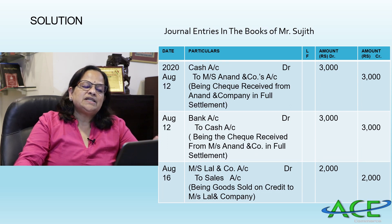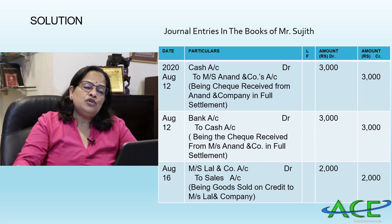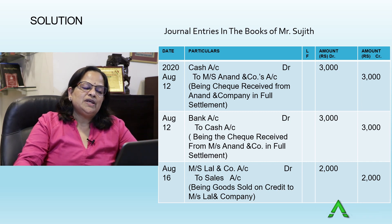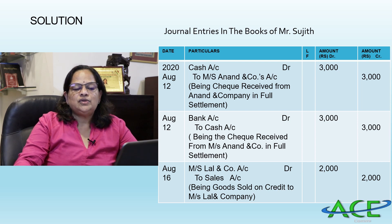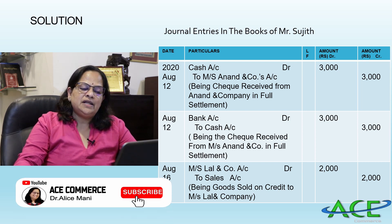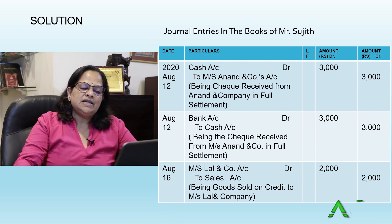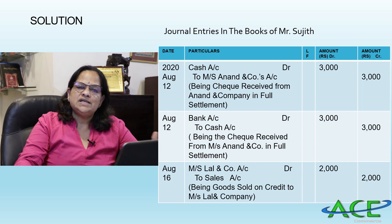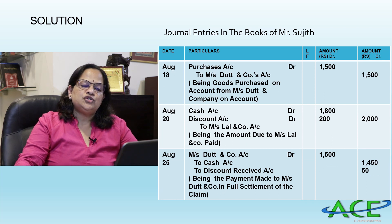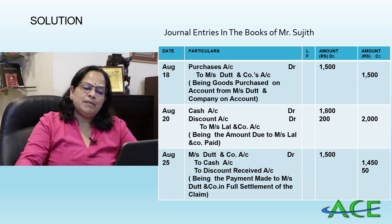August 9th — Messrs Anand and Company's Account Dr. to Sales Account ₹3,000, being goods sold on credit. August 12th — Cash Account Dr. to Messrs Anand and Company ₹3,000, being full payment received. Bank Account Dr. to Cash Account ₹3,000, being cheque received from Messrs Anand and Company deposited in bank. August 16th — Messrs Lal and Company Account Dr. to Sales Account ₹2,000, being goods sold on credit.